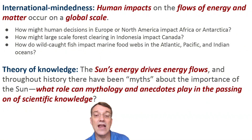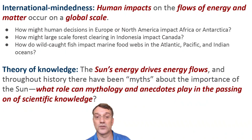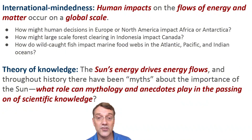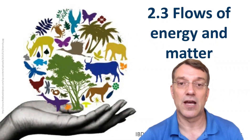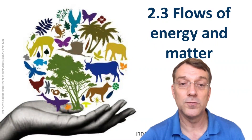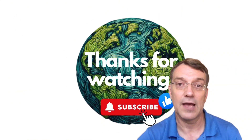Finally, consider international perspectives and philosophical questions. Human impacts on energy and matter flows cross borders — emissions in one country affect climate globally. Deforestation can impact atmospheric circulation patterns, and overfishing depletes ocean food webs worldwide. Throughout history, cultures have recognized the sun's importance through mythology, and these stories sometimes preserve knowledge before scientific understanding was written down. That's it for ESS Topic 2.3. Next time we'll explore biomes, zonation, and succession in Topic 2.4. Until then, happy learning.